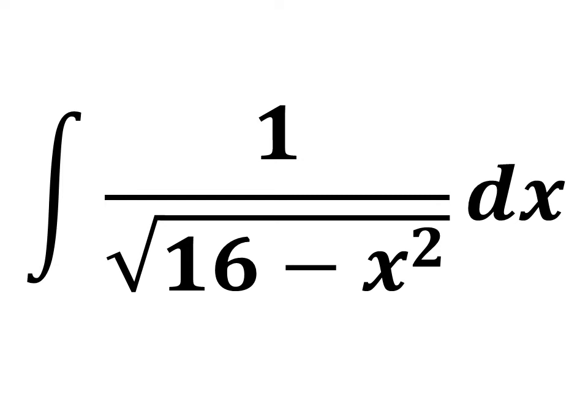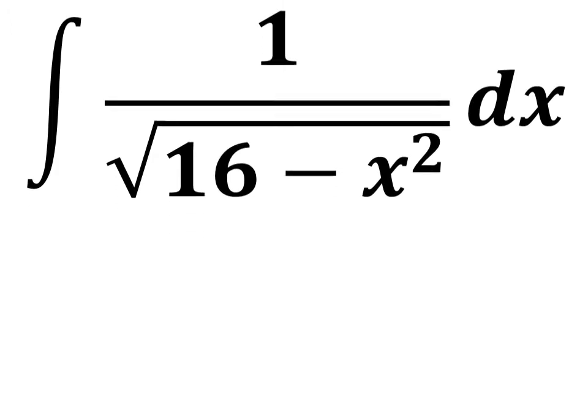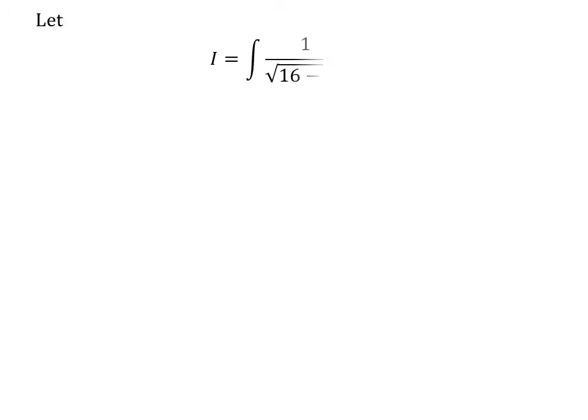In this video, we will learn to find the integral of 1 upon square root of 16 minus square of x. The substitution method has been applied to solve the integral. Let i be equal to integral of 1 upon square root of 16 minus square of x with respect to x. To simplify this integration, let us apply the substitution method. Assume x is equal to 4 times sine of u.